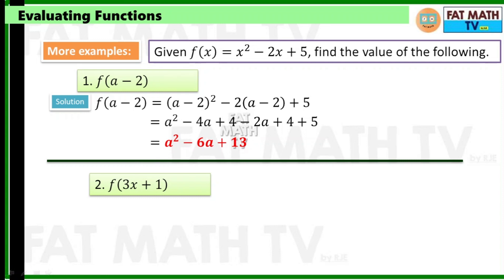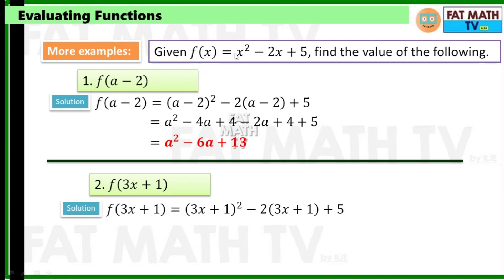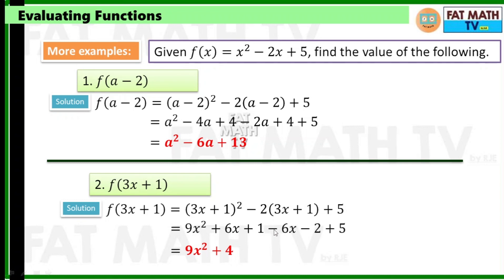For f of 3x plus 1, replace x with 3x plus 1. That gives (3x plus 1) squared minus 2 times (3x plus 1) plus 5. Expanding (3x plus 1) squared gives 9x squared plus 6x plus 1. Then negative 2 times 3x is negative 6x, and negative 2 times 1 is negative 2. Combining: 9x squared, 6x minus 6x cancels to 0, and 1 minus 2 plus 5 equals 4. So f of 3x plus 1 is 9x squared plus 4.